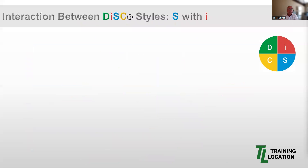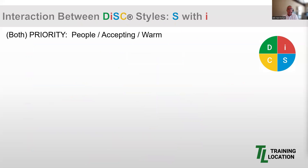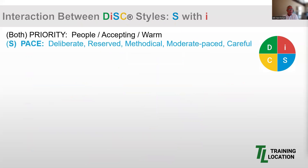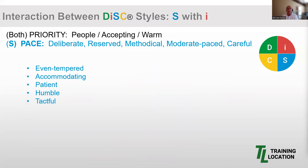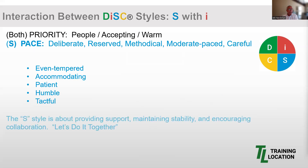We always consider pace and priority to understand a style. The two styles of S and I share a priority of people orientation, accepting and warm behavior. How they differ is in their pace. The S has a more deliberate, reserved, careful pace. Those descriptors include even-tempered, accommodating, patient, humble, and tactful. The S style is about providing support, maintaining stability, and encouraging collaboration. If they had a motto, it would be: let's do it together.